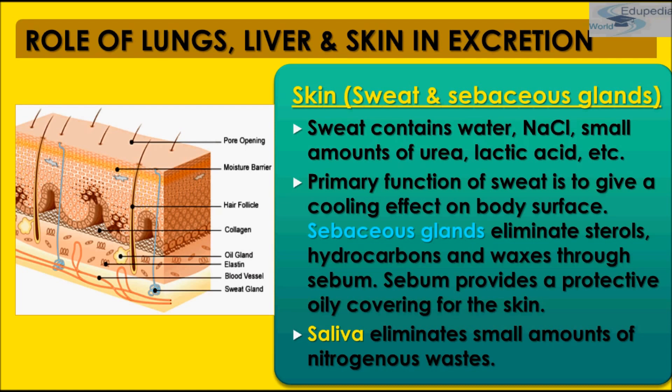Role of saliva in excretion: Saliva is secreted by salivary glands and contains some urea, which is passed into the digestive tract. Nitrogen in the urea is utilized by microbes of the intestine to make amino acids, which are then absorbed by the body to build proteins. Saliva thus eliminates a small amount of nitrogenous waste. This was all about the accessory excretory organs. In the next section, we will be studying about kidney disorders. Keep watching Edipedia World videos.